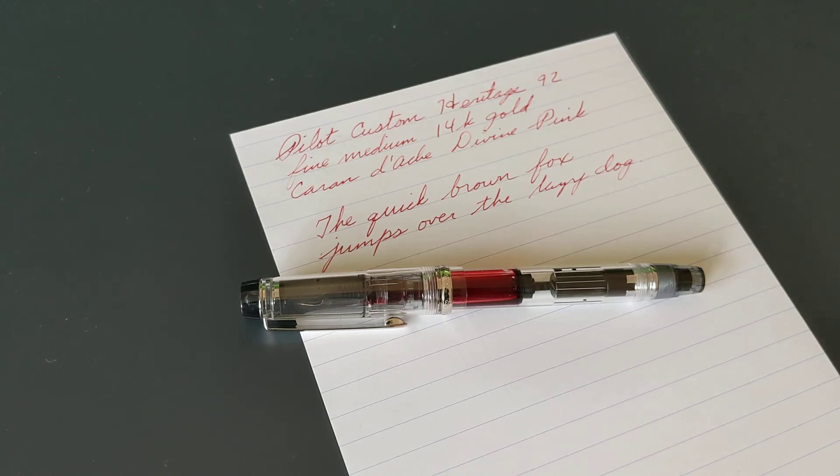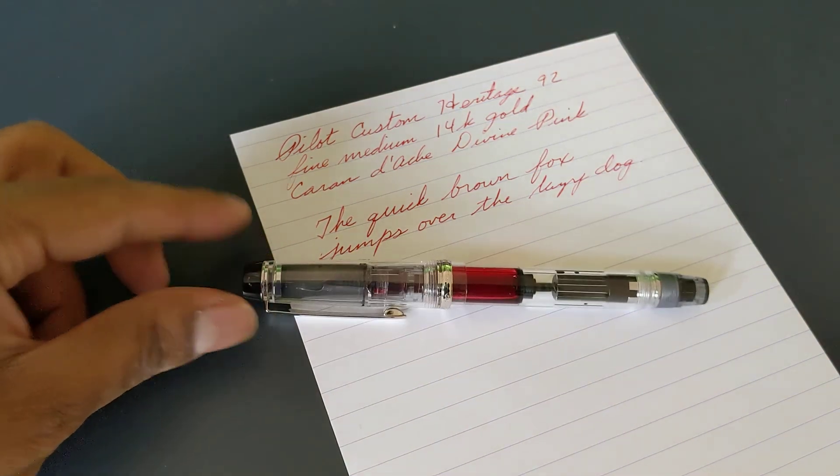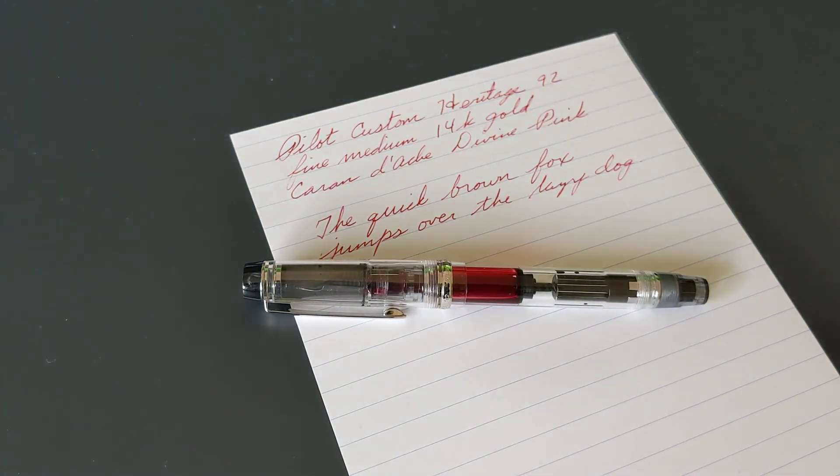We bought this pen for about $140 on JetPens, it was on sale. Usually these Pilot Custom Heritage 92 pens go for $156. Something about the clear model right now seems like they're going for $220. So in general, you're going to pay somewhere between $150 and $220, depending on what you're looking at.